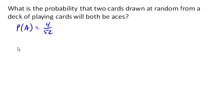And so it's really tempting to say the probability of getting an ace, and another ace is 4 out of 52 times 4 out of 52, right? Using our multiplication rule.